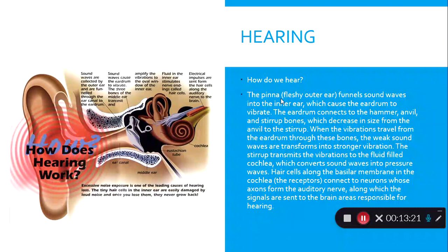In the fluid-filled cochlea, hair cells sit along the basilar membrane. When sound pressure waves hit the hair cells, those cells are connected to neurons that get stimulated and release neurotransmitters, sending the information up to your brain along the auditory nerve. To summarize: sound enters the outer ear, funnels to the eardrum, vibrates through the hammer, anvil, and stirrup, converts to pressure waves in the cochlea, stimulates hair cell receptors, and signals are sent to the brain.